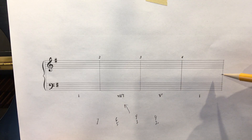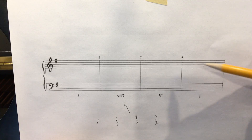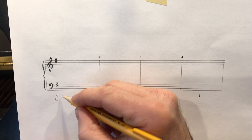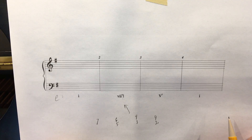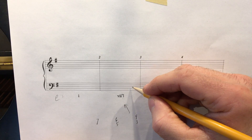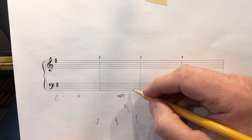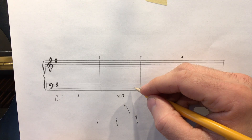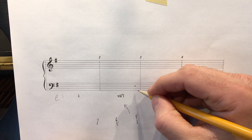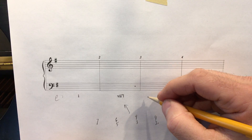Our leading tone diminished 7th chords typically happen in minor keys, and here we are with 1 sharp in the key of E minor. The leading tone is the root of the leading tone diminished 7th chord. We know that in minor our leading tones are typically raised. So what is the leading tone in the key of E minor? If E is scale degree 1, the leading tone has to be scale degree 7.